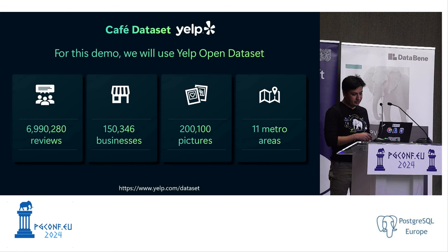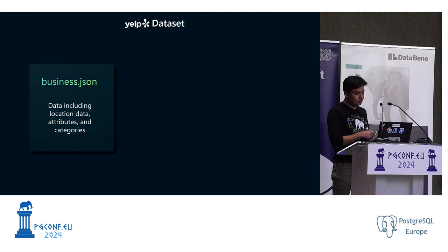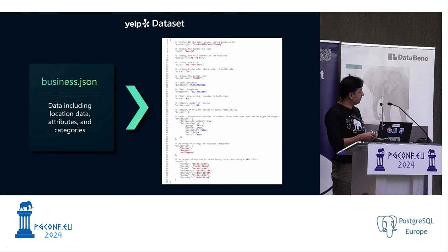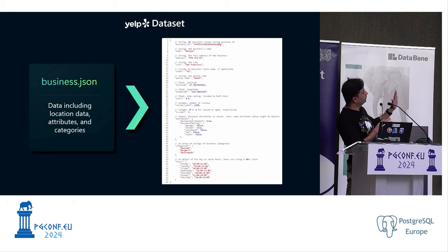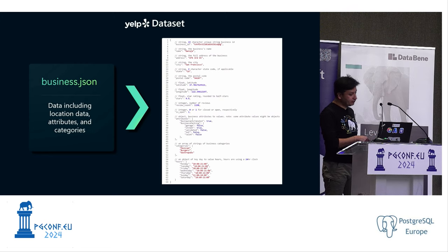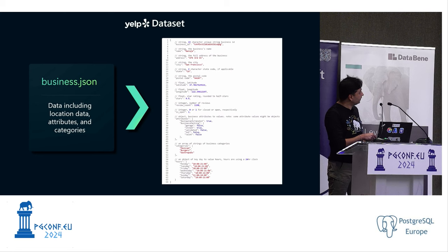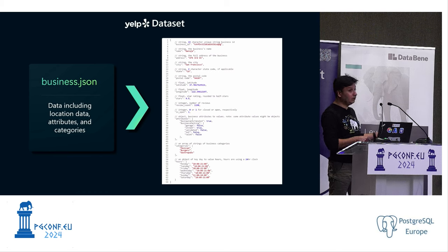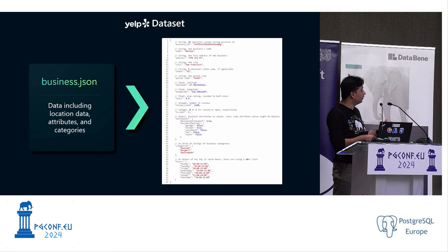Here's the bit.ly link for the dataset. In the business.json table, the key things I'm looking at are categories, attributes, and the days the business is open. Is it open right now? That's very important — I just want coffee right now, not in the future.